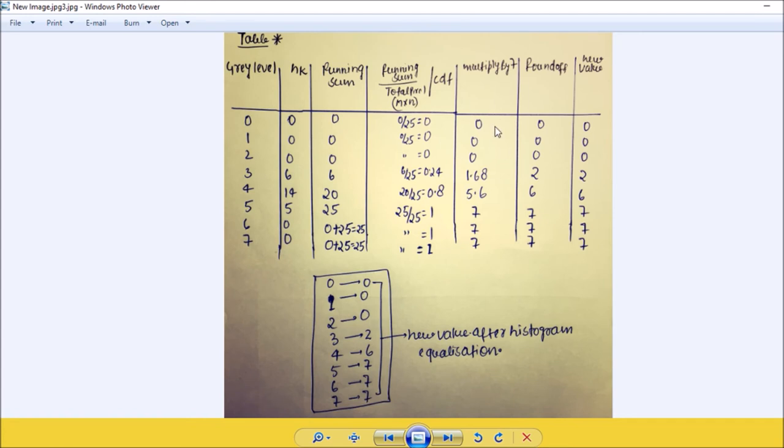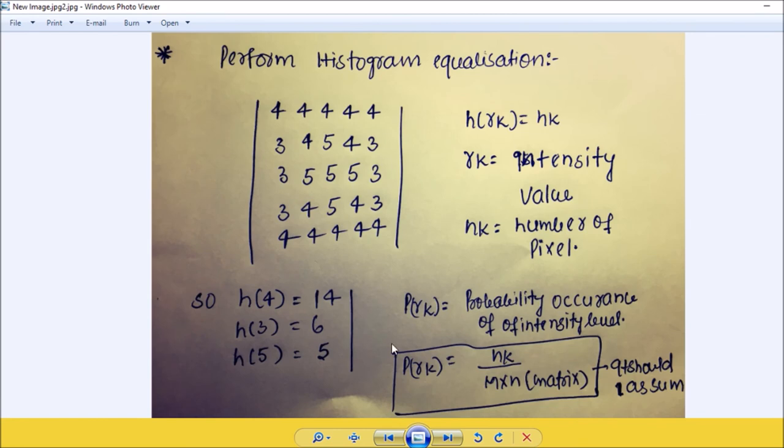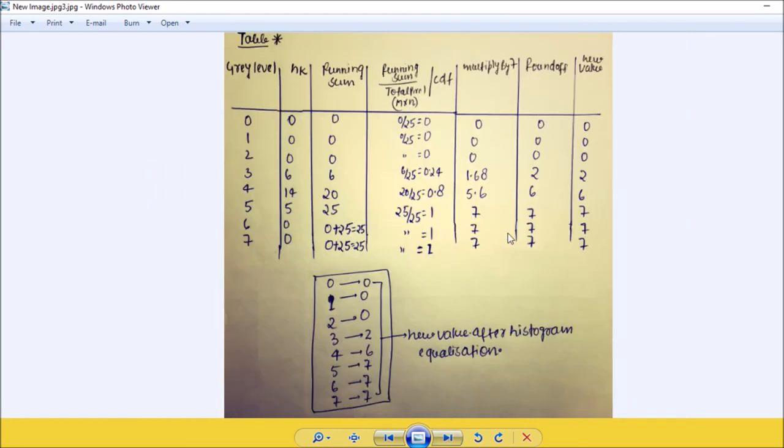Now round up this value: 0, 0, 0, 2, 6, 7, 7, 7. And this is the new value. So 3 is replaced by 2, 4 is replaced by 6, and 5 is replaced by 7. 6 and 7, it is not in our matrix, so no problem. I think you are understanding.